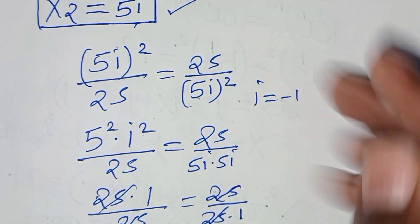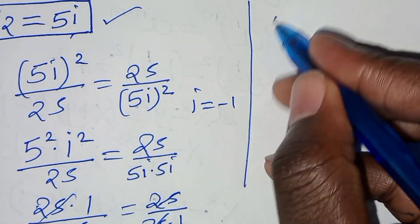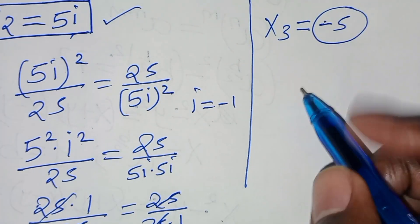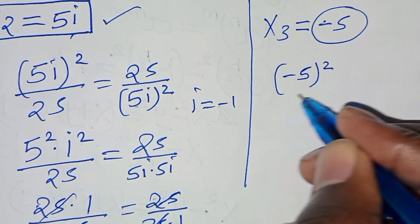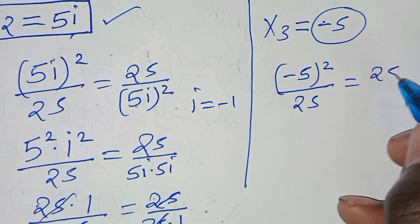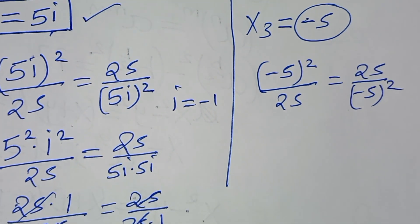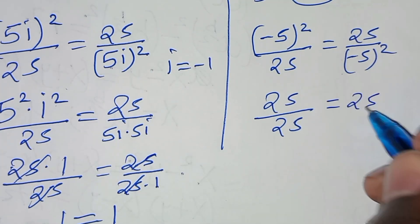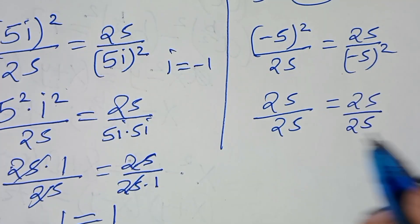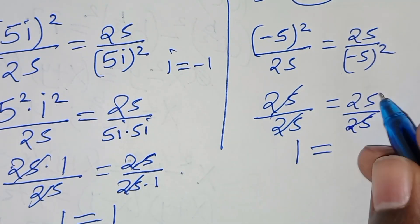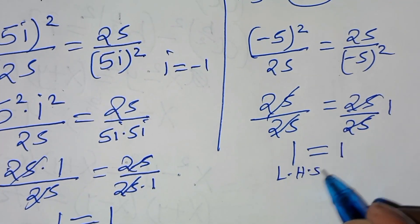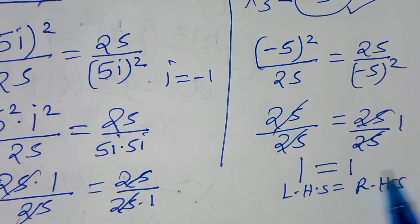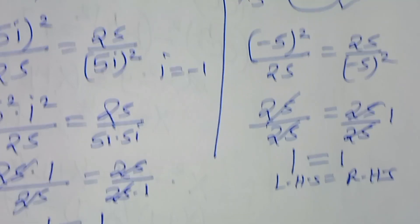Let's check x₃ = −5. Substituting negative 5, we have (−5)² / 25 = 25 / 25 on the left, and 25 / (−5)² = 25 / 25 on the right. Both sides equal 1, so the left-hand side equals the right-hand side, and therefore x₃ satisfies the equation.